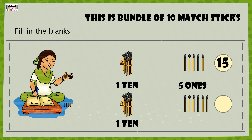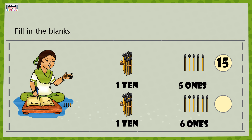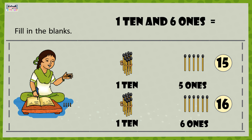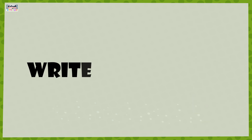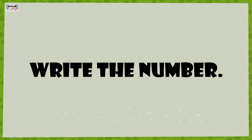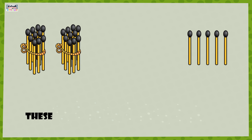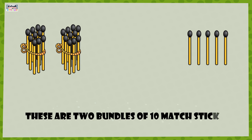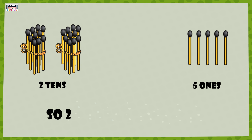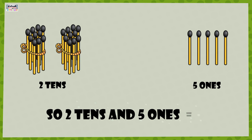1 ten and 5 ones is equal to 15. This is a bundle of 10 matchsticks, so this is 1 ten and these are 6 ones, so 1 ten and 6 ones is equal to 16. Write the number: these are two bundles of 10 matchsticks in each, so it is two 10s and these are 5 ones, so two 10s and 5 ones is equal to 25.